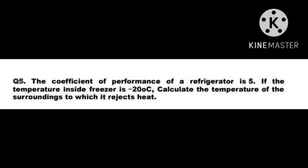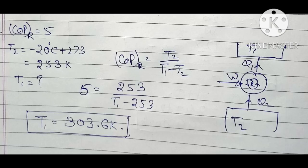Question number 5: The COP of a refrigerator is 5, and the temperature inside is minus 20 degree centigrade, which equals 253 Kelvin. Calculate the temperature of the surroundings to which it rejects heat, i.e., find T1. Using COP = T2 / (T1 - T2), we get 5 = 253 / (T1 - 253), so T1 = 303.6 Kelvin.